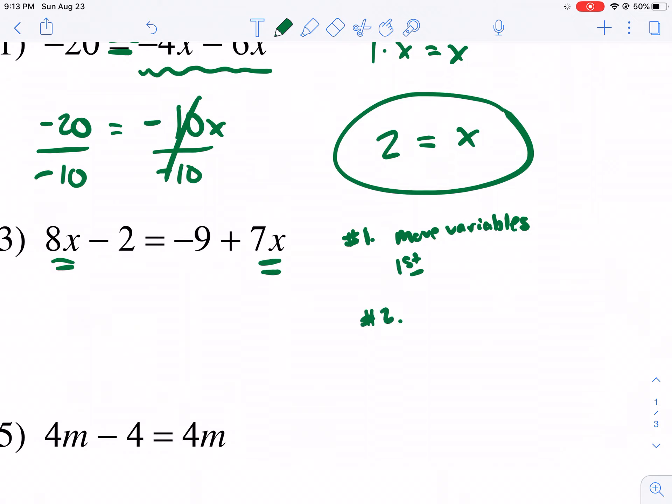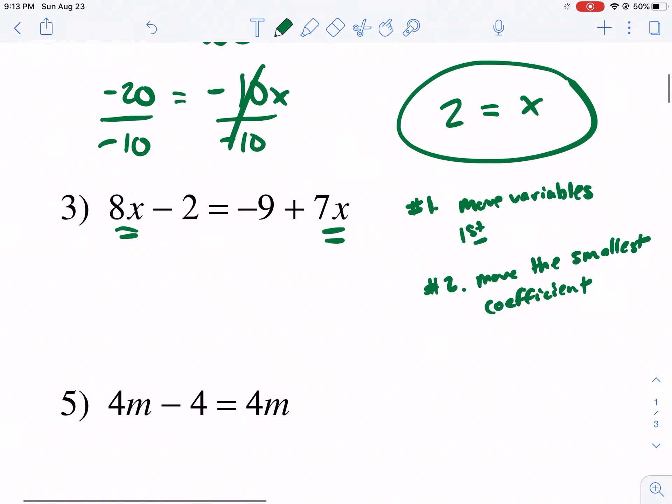And then how do we know which variable to move? We move the smallest coefficient. And that will make it easier for you, so you're not dealing with negative numbers or negative coefficients. In my opinion, it's the best way to go. So if we have 8x and 7x, just like numbers, we can subtract or add them from both sides. So since we have a positive 7x, we're going to subtract 7x because that will make it cancel out. It'll make it go to zero. Also keep in mind, we only subtract the 7x from the 7x.